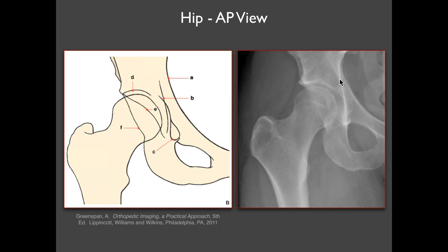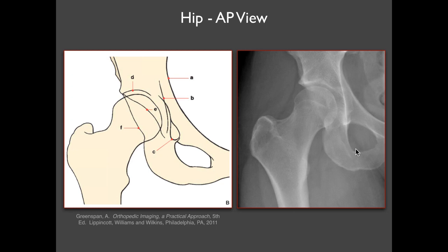A couple of other lines you want to look at on the hip radiograph: the posterior acetabular wall — it's a difficult structure to see because it's very faint sometimes — and here's the anterior acetabular wall crossing over the posterior wall just slightly. The A and B lines indicate the so-called iliohectaneal or iliocubic line of the pelvis, and this line is the ilioischial line. Those lines are important to look at in terms of acetabular fractures and other disorders.